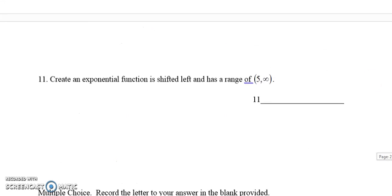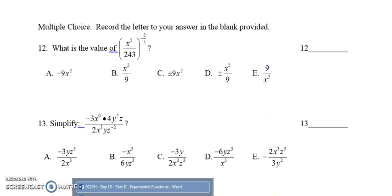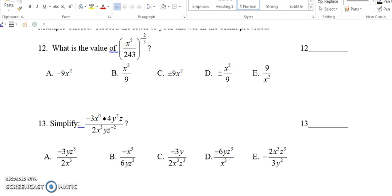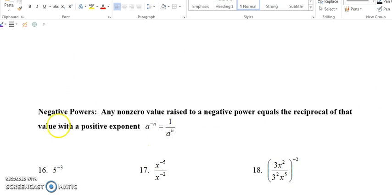Just before we get started on that problem, I want to remind you that in order to do number 12, you have to remember a few properties we went over on day one. One is the power of a quotient property — we are going to be distributing those powers when the fraction is raised to a power, so the numerator and denominator are each raised to that power. Also, we are going to be using the negative power property: any non-zero value raised to a negative power equals the reciprocal of that value with a positive exponent.